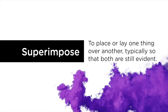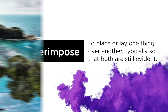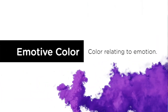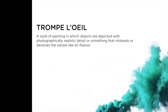Superimposing is to place or lay one thing over another, typically so that both are still evident. Emotive color is color relating to emotion — for instance, the color yellow is often given the feeling of happiness. Trompe l'oeil is a style of painting in which objects are depicted with photographical realistic detail, or something that misleads or deceives a scene like an illusion.